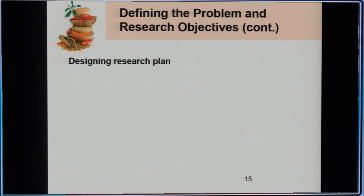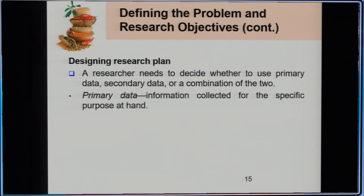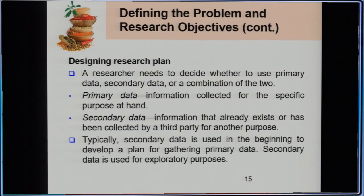Once you have defined the problem and research objective, you have to design the research plan. A researcher needs to decide whether to use primary data, secondary data, or a combination of both. Primary data is information collected for a specific purpose at hand. Secondary data is information that already exists or has been collected by a third party for another purpose. Typically, secondary data is used first to develop a plan for gathering primary data.